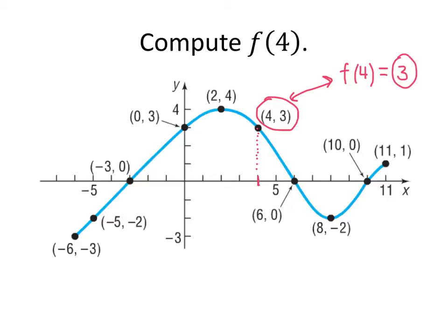So if we had wanted to know what's f(8), let's say that was the question that was asked. Well, f(8) would be the y-coordinate of a point on our graph where the x-coordinate is 8. In this case, we've got the point (8, -2). So that means that when we plug 8 into our function, -2 is what we get out.